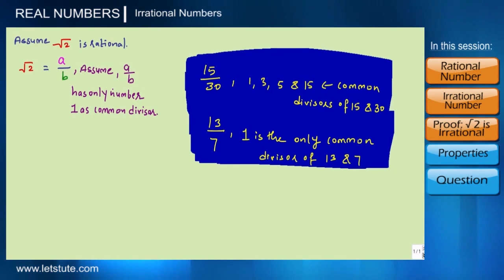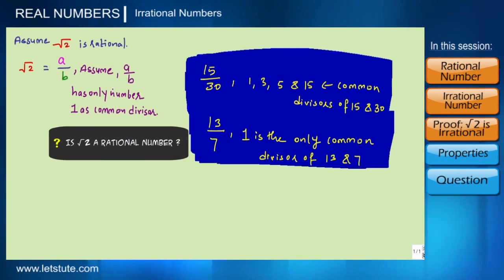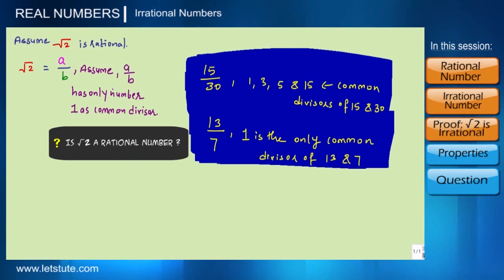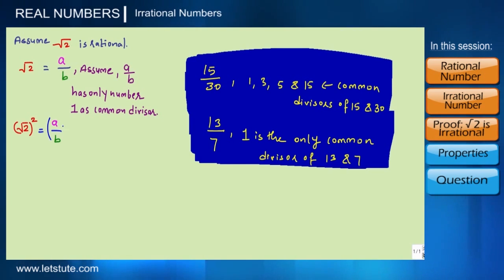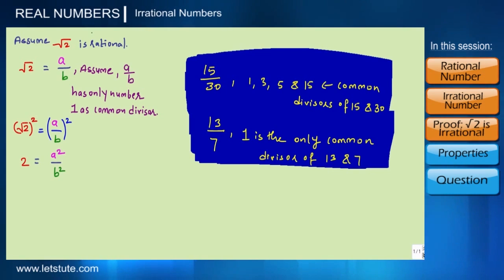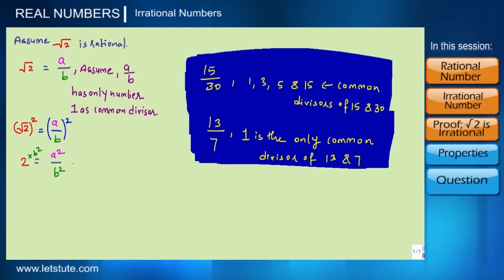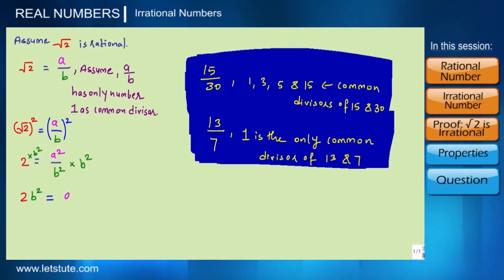We've assumed a and b have only 1 as a common divisor, to check whether root 2 is really rational — if during the proof we find another common divisor, then root 2 is not rational. To remove the square root sign, we square both sides: (root 2)² = (a/b)², which gives 2 = a²/b². Multiplying both sides by b², we get 2b² = a².